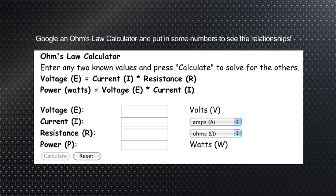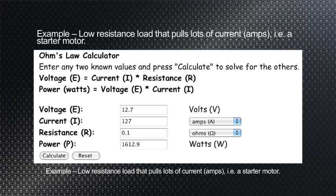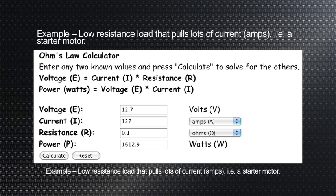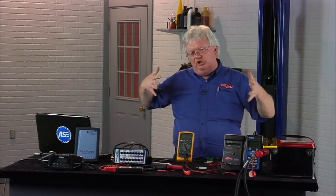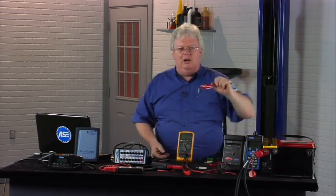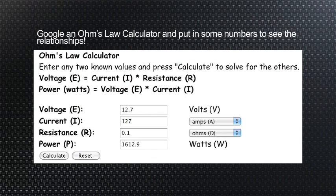...if we know, we plug in some numbers here, we know the voltage in a series circuit is 12.7 volts, and the resistance is 0.1, so way less than 1 ohm, a tenth of 1 ohm of resistance total in a circuit leading up to a battery.